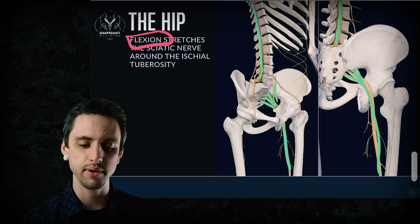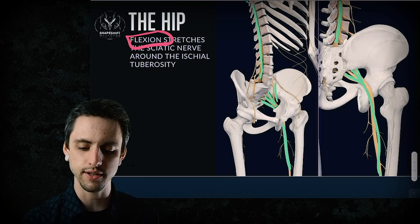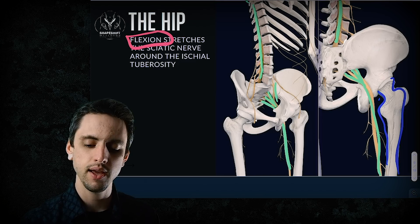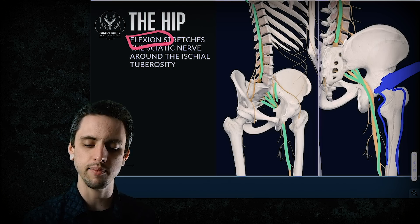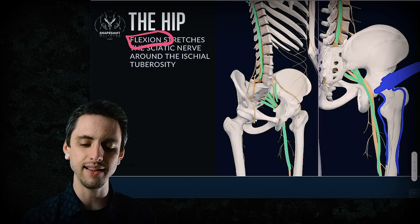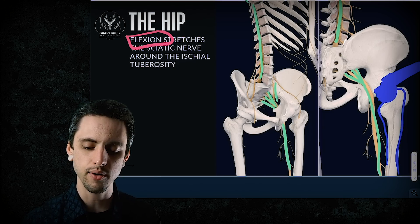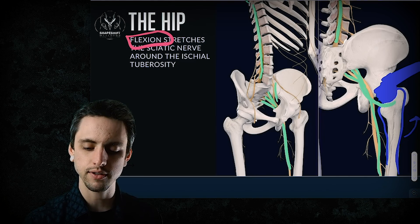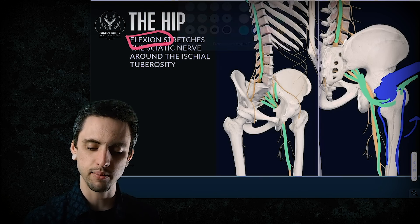Hip flexion creates compression of the nervous system. Here's your femur — the nervous system is pictured in green. When you take the hip into flexion, the sciatic nerve has to wrap around. We're looking at this person from behind, and you can see the greater trochanter. When we take the leg up into flexion, the sciatic nerve wraps around and gets hung up and compressed right there.